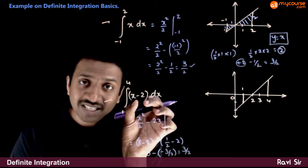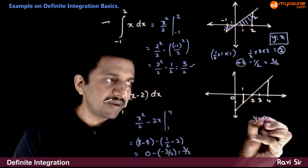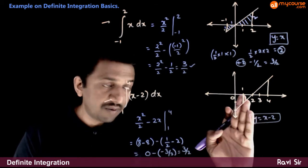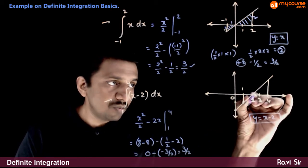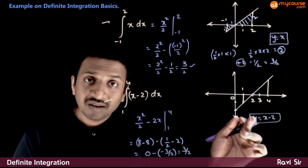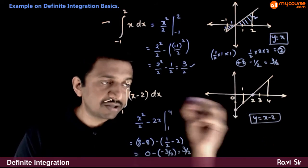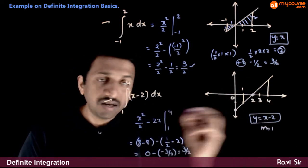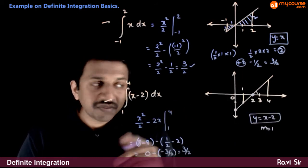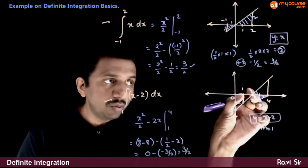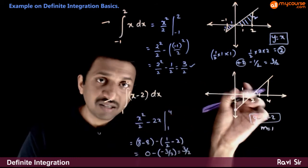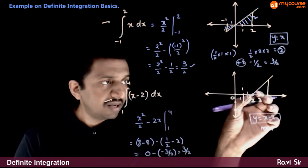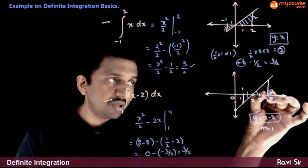Now consider the curve y is equal to x minus 2. This is also a straight line. The x-intercept — putting y equal to 0 — is 2. The y-intercept — putting x equal to 0 — is minus 2. So you have a straight line with slope 1, again moving at 45 degrees. From 1 to 2, the length is 1, and because the line is at 45 degrees, the height is also 1. For the other triangle, the base length is 2 and the height is 2.